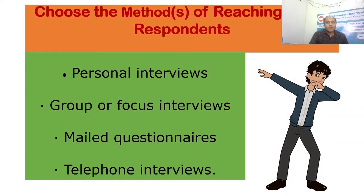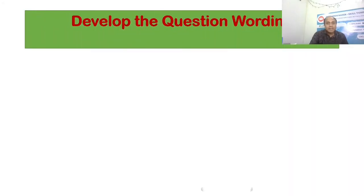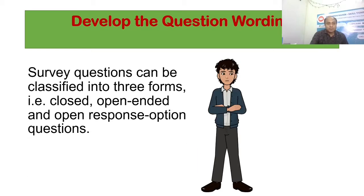You also need to consider how you are going to reach your target audience. There are different ways: personal interviews, focus group discussions (FGD) interviews, mailing your questions, and telephone interviews. Regarding the wording of questions, survey questions can be classified into three forms: open-ended, close-ended, and open-response option questions — a mixed-type method. Make a perfect balance between close-ended and open-ended questions in order to create a very good questionnaire.